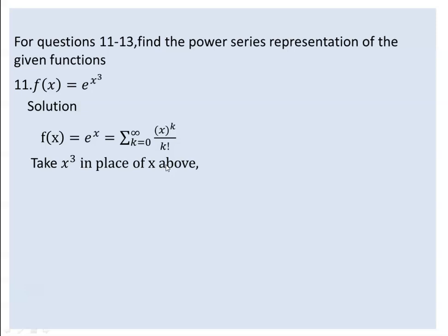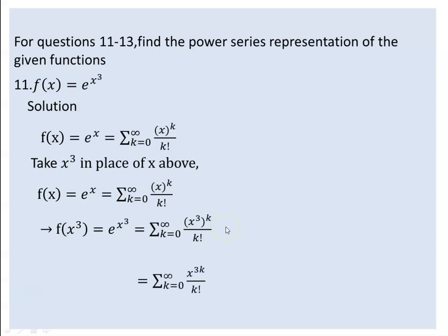When we replace x cubed in place of x in the above expression, the Maclaurin series or the power series representation of e to the power of x cubed is the summation from k equals 0 to infinity of x to the power of 3k over k factorial.